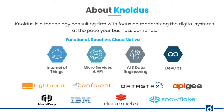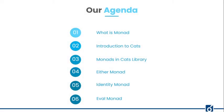Now that's all about my company and let's move forward to today's agenda. Today I will be discussing about Monad — basically what is Monad. Then we will look at a brief introduction to CAT's library. Then we will see Monads in CAT's library, and some monadic instances provided by CAT's library — specifically the Either Monad, Identity Monad, and Eval Monad. There are many more, but today we will discuss only these three.